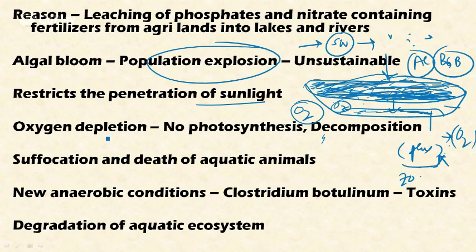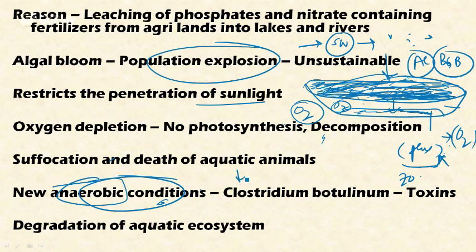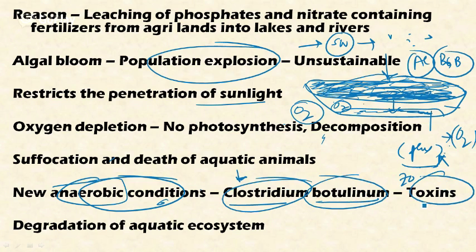Because of the reduced dissolved oxygen, an anaerobic environment is created. This anaerobic condition triggers the growth of bacteria like Clostridium botulinum, which produces toxins that are harmful and lethal to various aquatic organisms including fish and shellfish. If any mammal or bird consumes these poisoned aquatic organisms, they also face the possibility of death. This whole chain reaction results in the degradation of the aquatic ecosystem.